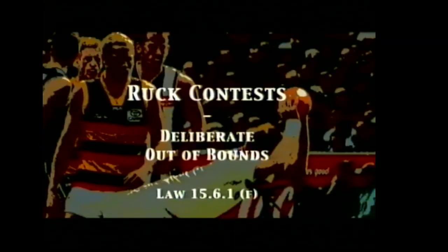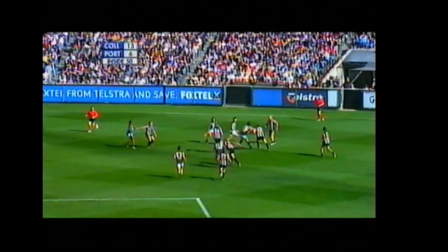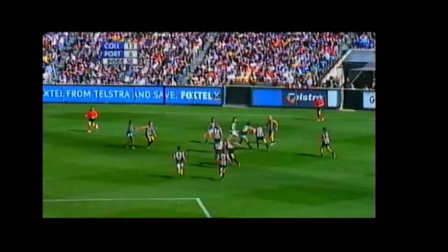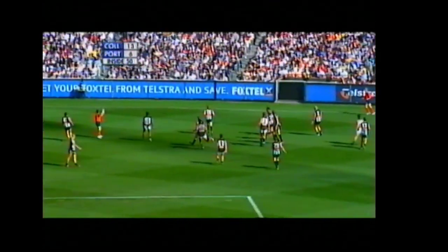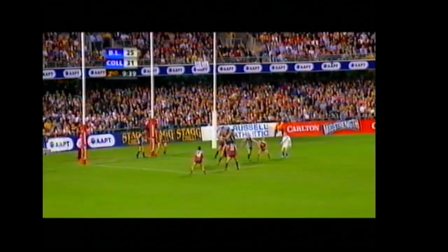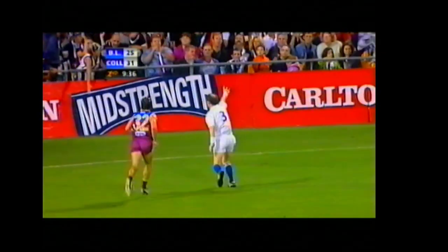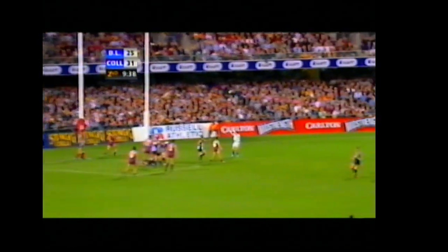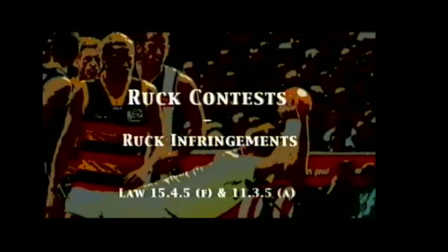This segment covers ruck contests and the various components of this law. The first component relates to deliberate out of bounds — any player who knocks the ball out of bounds on the fall from a ruck contest will be penalised. The next component regarding ruck contest infringements relates to illegal contact, which may be in the form of blocking, shepherding or holding.